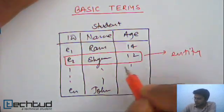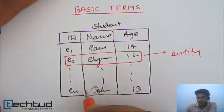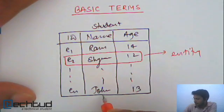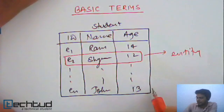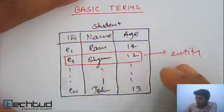So this is entity. Another record, this is Ram. This is again entity. This is student EN, name John and age 13. This is also an entity. So each record in this storage table is an entity.